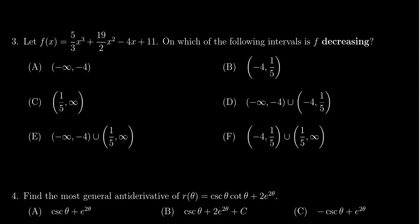In this video we provide the solution to question number three for practice exam four for Math 1210. We are given the function f(x) = (5/3)x³ + (19/2)x² - 4x + 11, and we're asked on which of the following intervals is f decreasing.